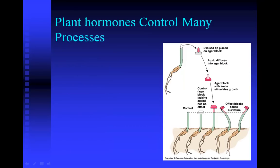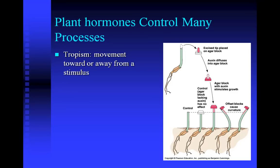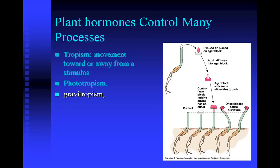The first plant hormones were discovered by botanists who were interested in tropisms, and tropisms are movements away from or towards a stimulus. The three major tropisms seen in plants are phototropism, which is the movement of a plant towards light; graviotropism, which is how a plant knows to send the roots down and the stems up; and thigmotropism, which is a plant's response to touch.